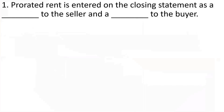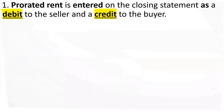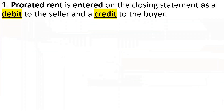Number one: Prorated rent is entered on the closing statement as a blank to the seller and a blank to the buyer. The answer is: prorated rent is entered as a debit to the seller and a credit to the buyer.